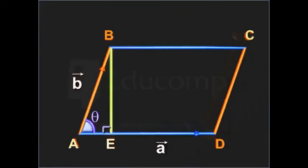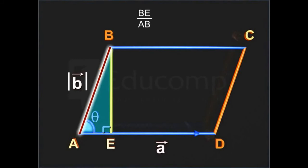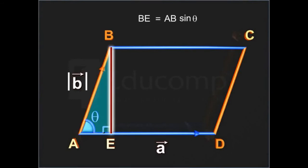Now, in the right triangle ABE, BE upon AB is equal to sin theta. So, BE is equal to AB sin theta.